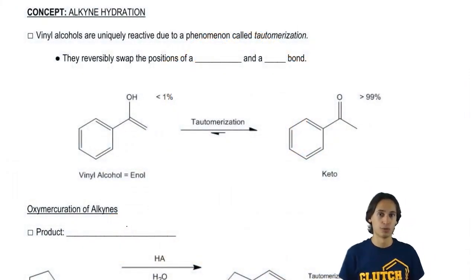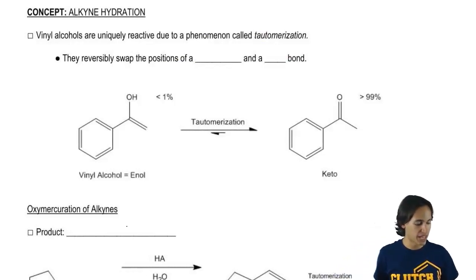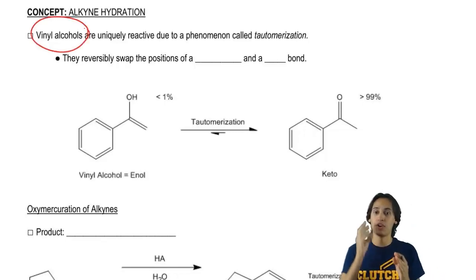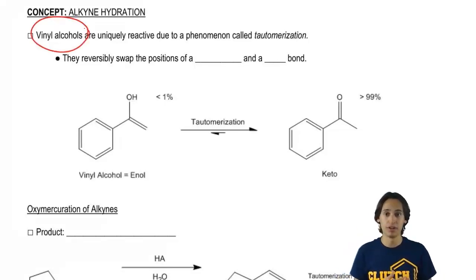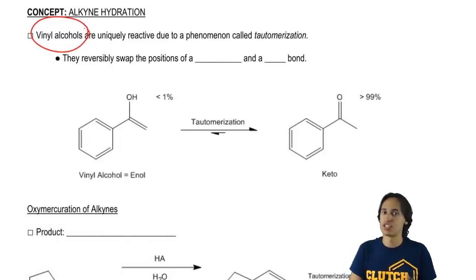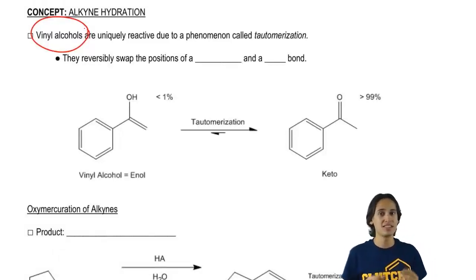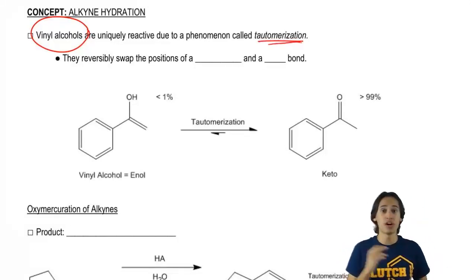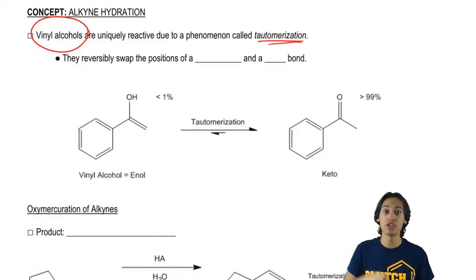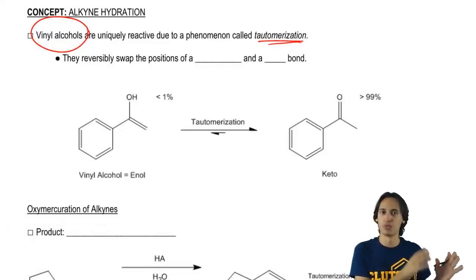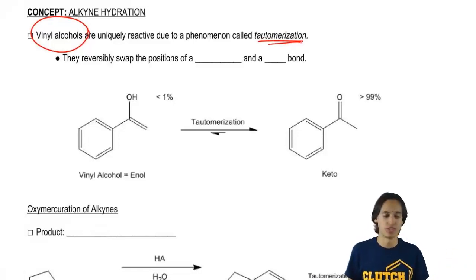This is going to be the hydration of triple bonds. It turns out that any time that you make a vinyl alcohol — that's the name for basically having an alcohol directly on a double bond — that is going to react very uniquely. It's not going to react like the addition reactions that we saw with double bonds. In fact, this is going to do a phenomenon called tautomerization. This is a phenomenon that we're not going to fully understand the mechanism for until Orgo II, so I'm just going to give you a quick refresher on what tautomerization is.